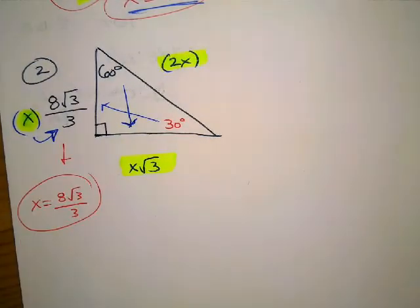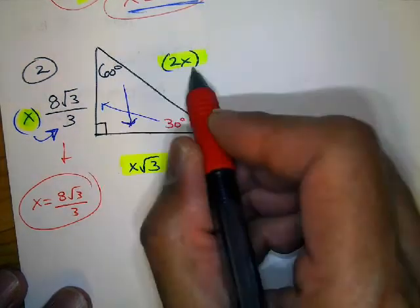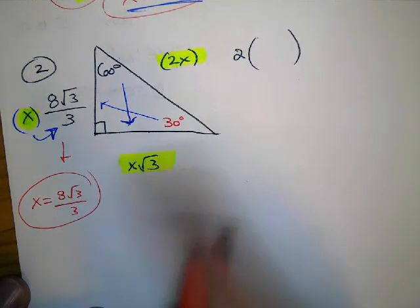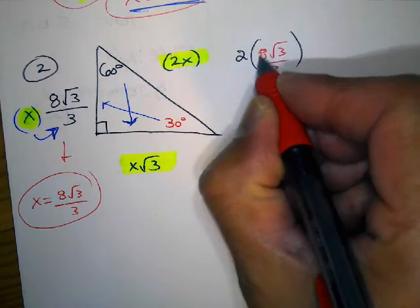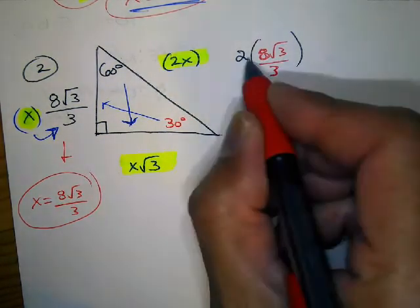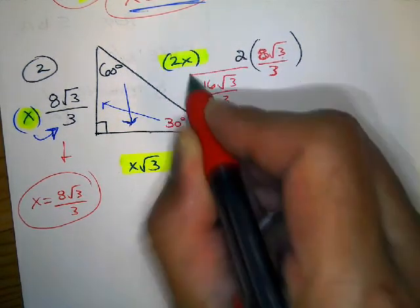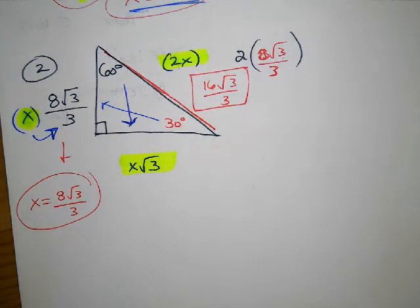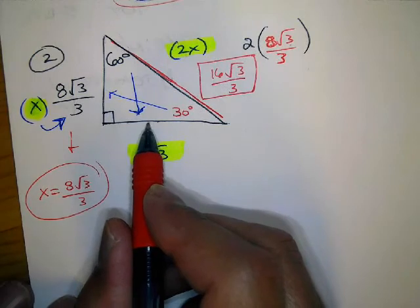x is 8√3 over 3. Now I need to find the other sides. The hypotenuse side is 2 times this value of x: 2 times 8√3 over 3. Multiply the 2 only to the whole number on top — 2 times 8 is 16. So the hypotenuse is 16√3 over 3. Then the remaining side is x√3, so that's 8√3 over 3 times √3. The √3 times √3 gives a whole 3, and that 3 cancels with the denominator 3.